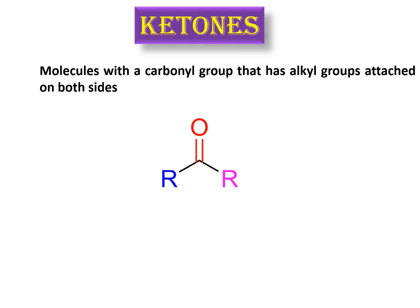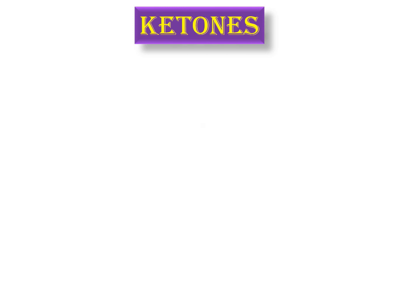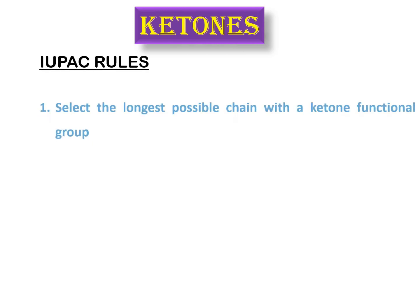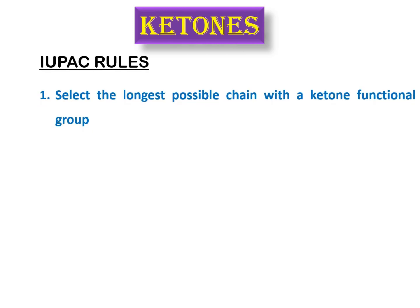Let's discuss the IUPAC rules for naming ketones. The first rule is to select the longest possible chain that has the ketone functional group, because in ketones this carbonyl functional group is the parent functional group. You have to keep in mind that you select the chain which has this ketone functional group.